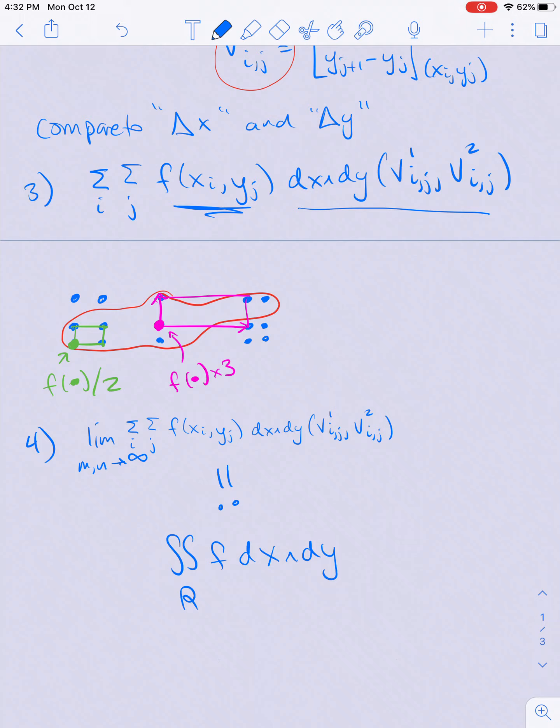This limit is the integral over the region R of f times the two-form or the volume form dx∧dy. What you might remember from multivariable calculus is this is just equal to the double integral over the region R of f dx dy, computing this integral with the order of integration x first and then y. We did all this work just to show that the integral of a function times the differential volume form dx∧dy is just what we would have hoped it would be.